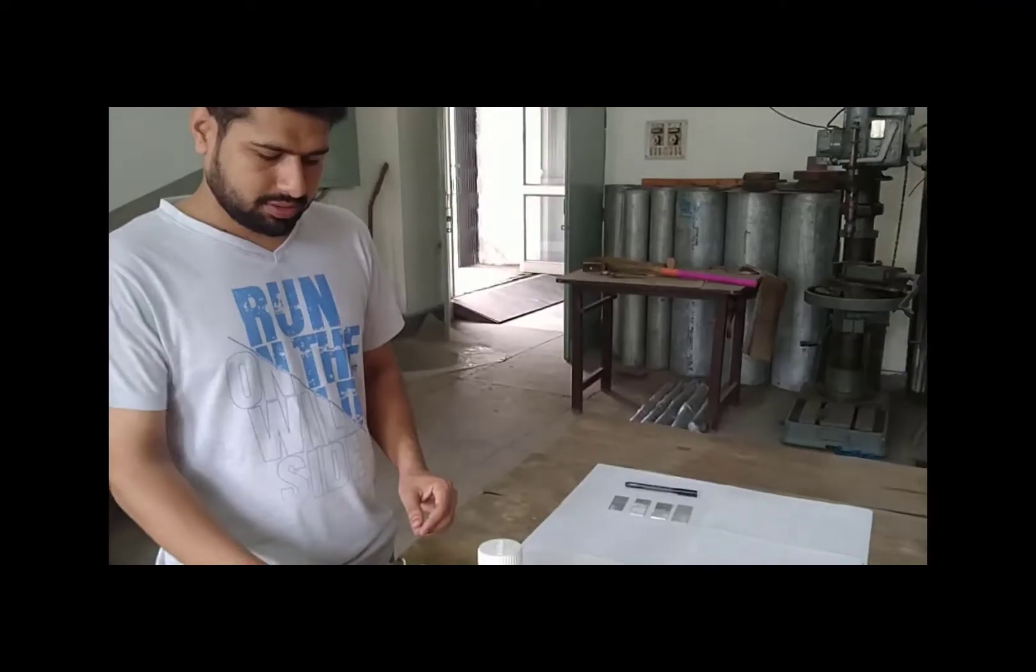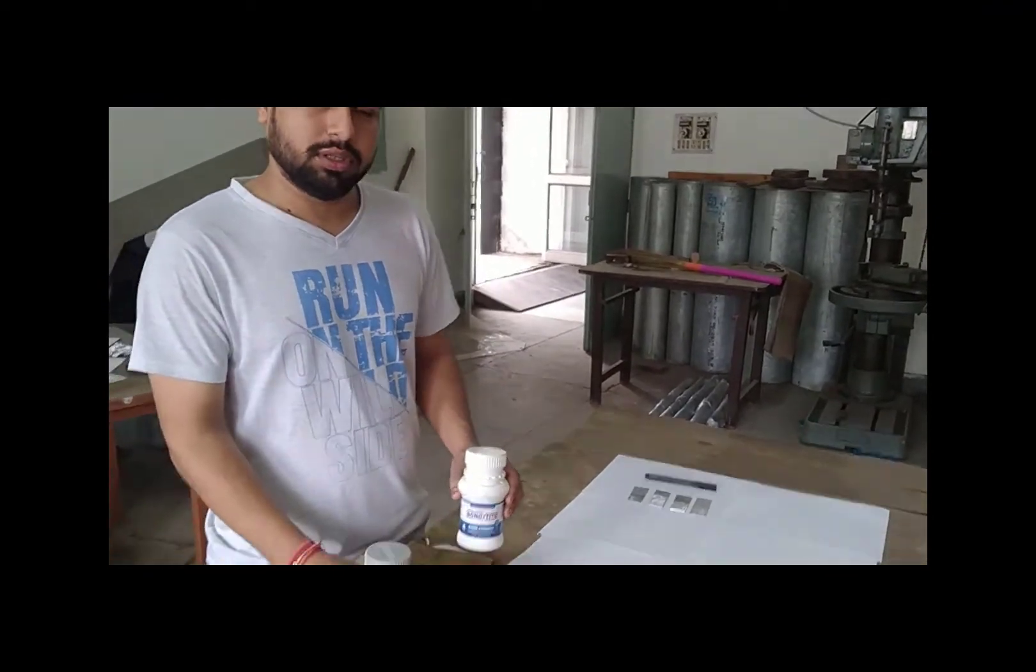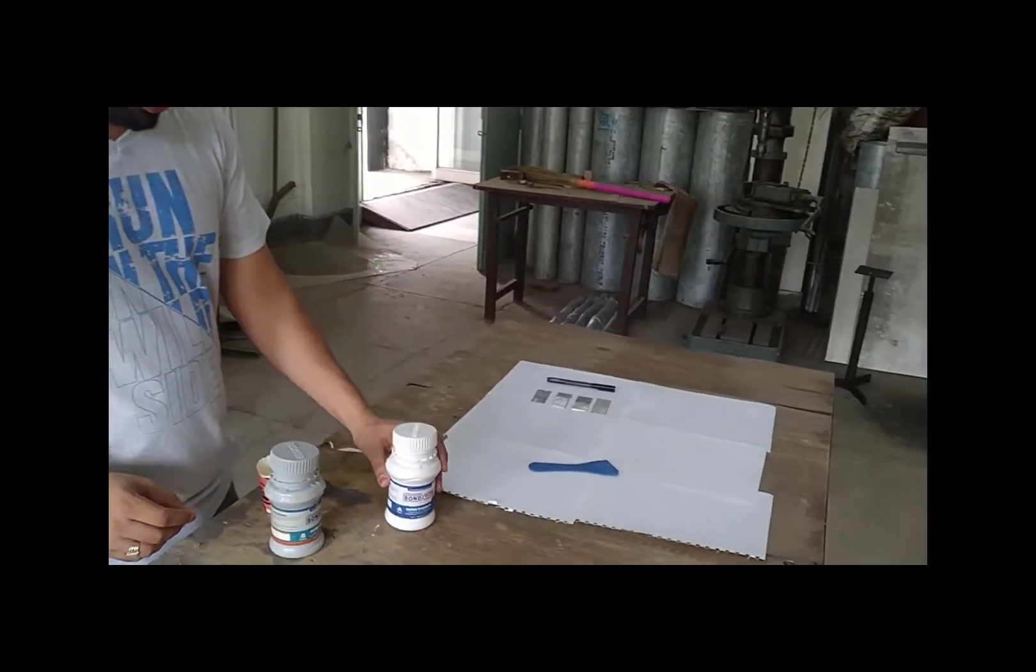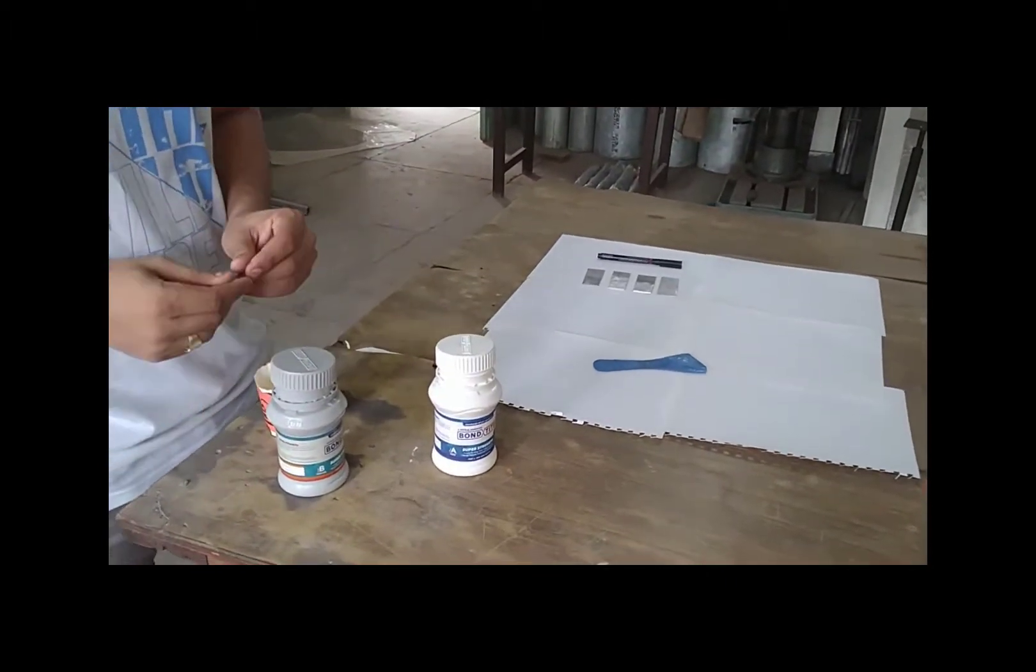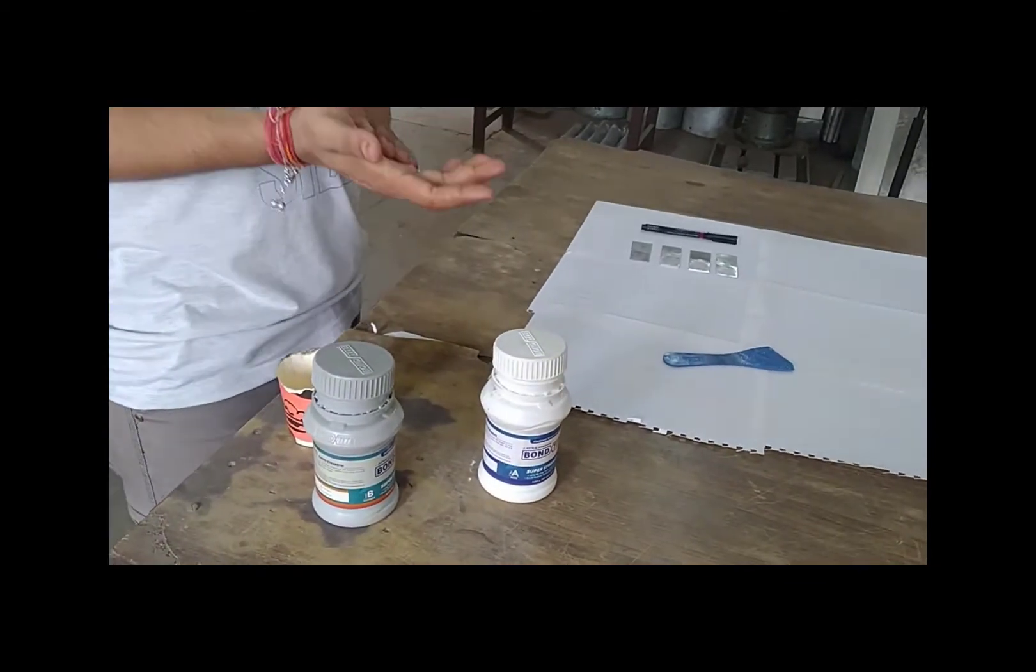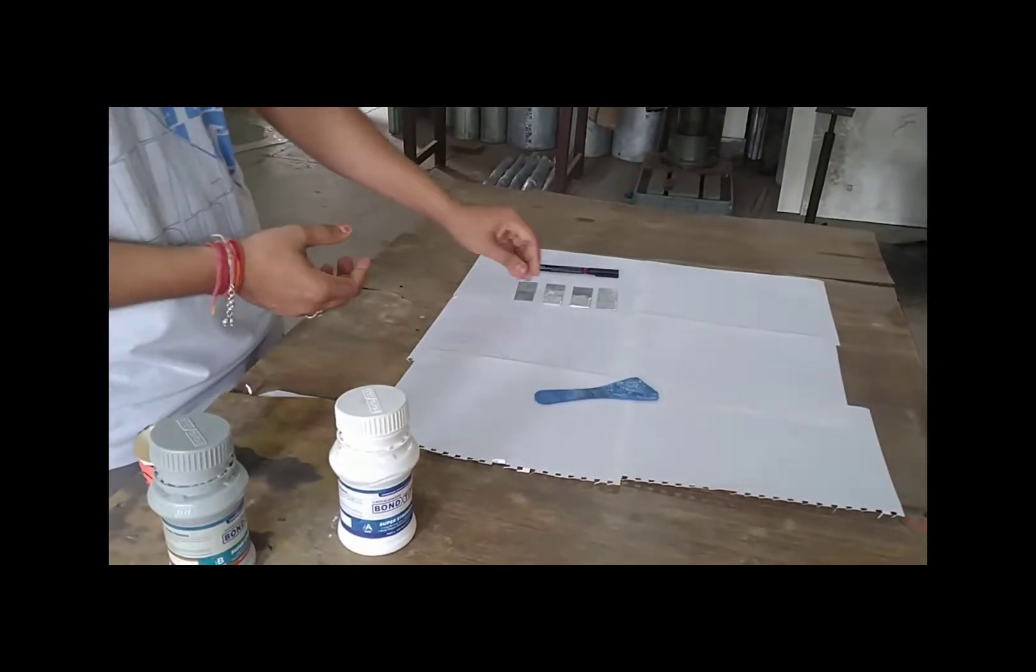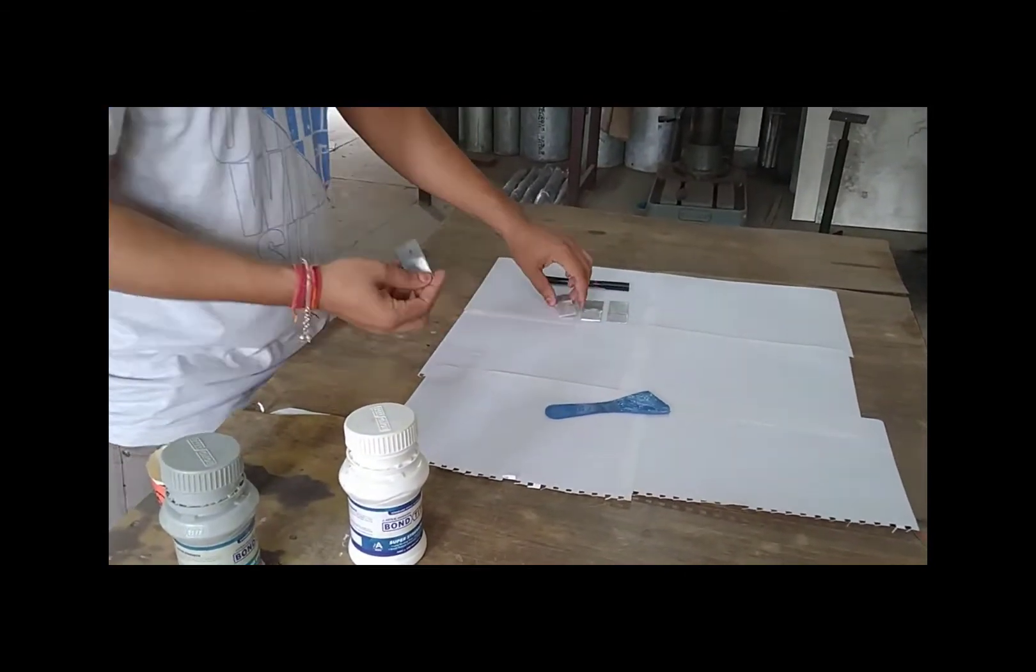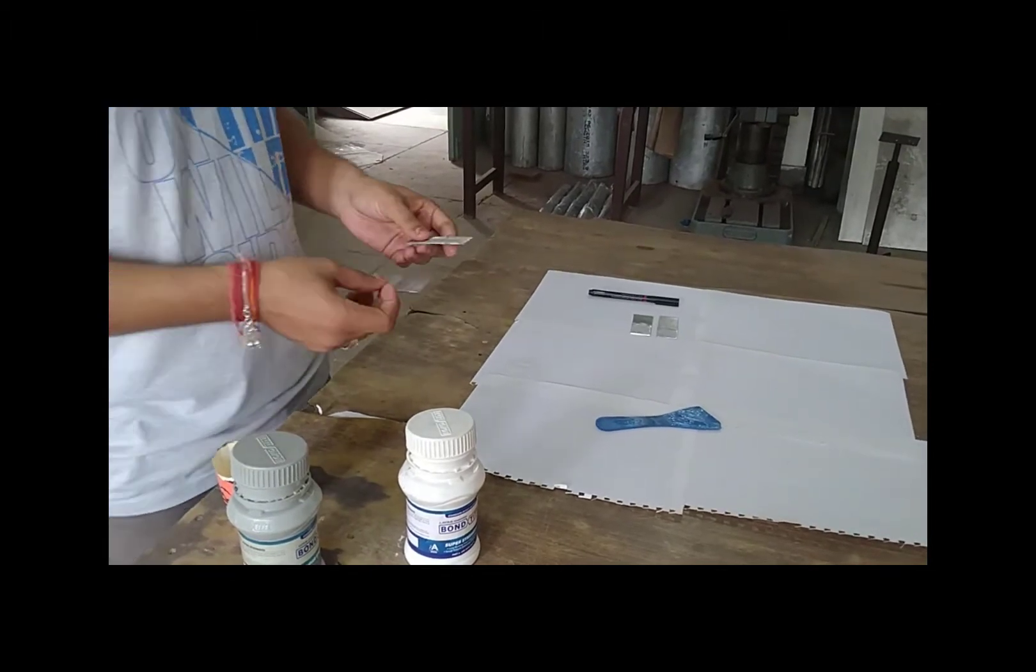These are the two components of adhesive which we generally use for adhesive joining. First of all, what are the uses of adhesive joining? Why is it advantageous? It is useful in joining any thickness of sheets.